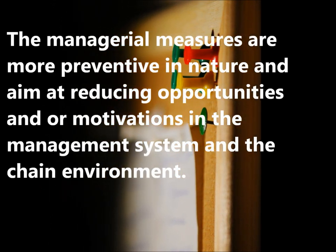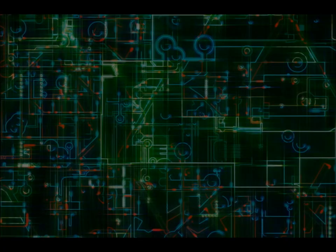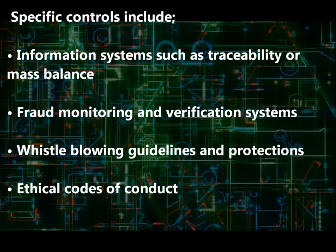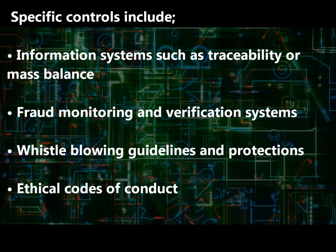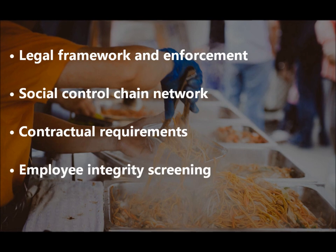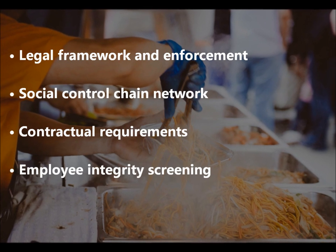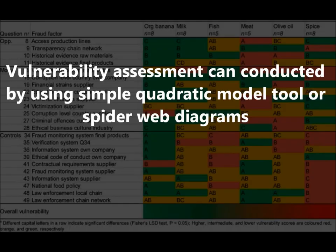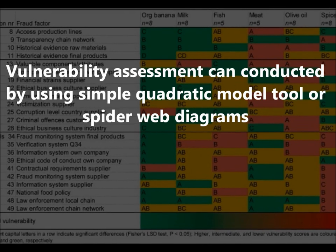The managerial measures are more preventive in nature and aim at reducing opportunities and/or motivations in the management system and the chain environment. Specific controls include information systems such as traceability or mass balance, fraud monitoring and verification systems, whistleblowing guidelines and protections, ethical codes of conduct, legal framework and enforcement, social control chain network, contractual requirements, and employee integrity screening. Vulnerability assessment can be conducted using a simple quadratic model tool or spider web diagrams while considering the above-mentioned criteria.